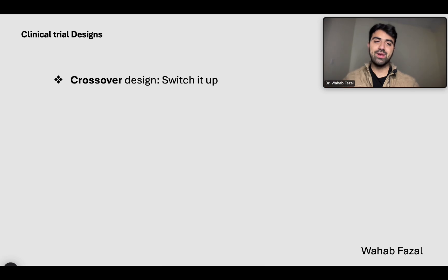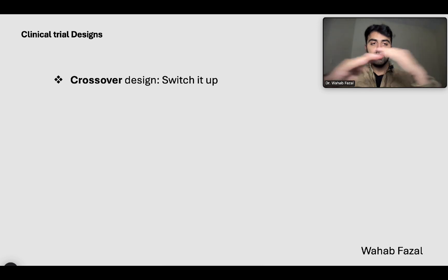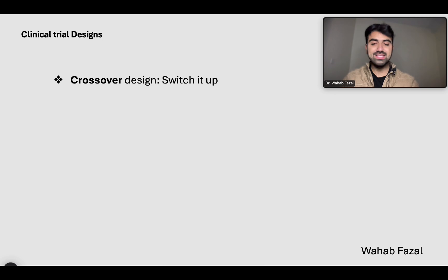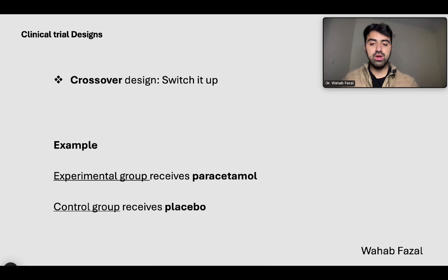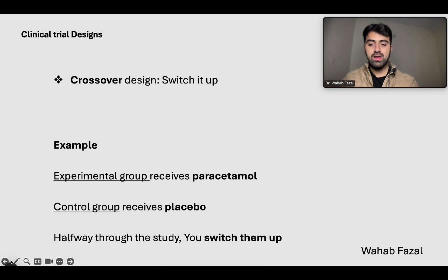Another design is known as a crossover design. Basically, you switch things up: you put some people in the experimental group and some in the control group, give them their medications, and then halfway through the study you switch them. An example: the experimental group receives paracetamol and the control group receives placebo; halfway through, the experimental group now receives placebo and the control group starts receiving paracetamol.